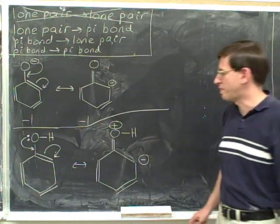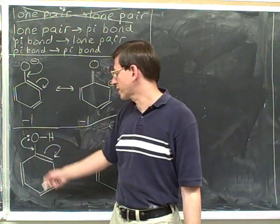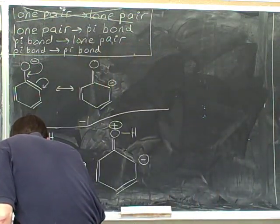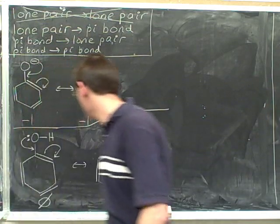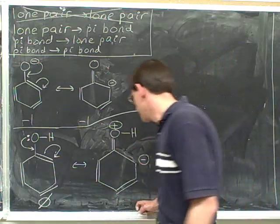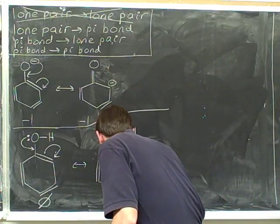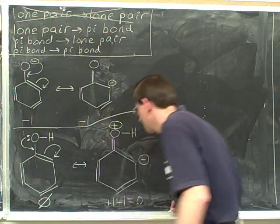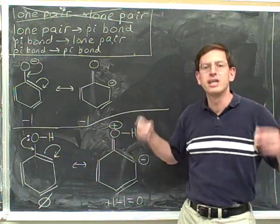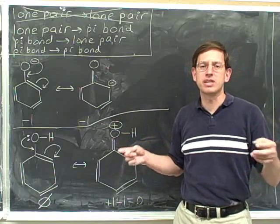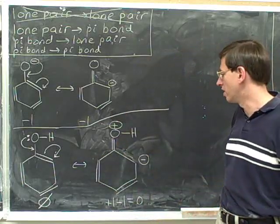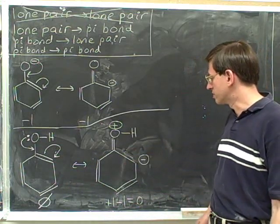Now let's make sure that the charge is balanced. The overall charge in this picture is 0, because there are no charges. So this picture has a net charge of 0. Now in this picture, there's one positive charge and one negative charge — plus 1 minus 1 is also 0. Both pictures have the same net charge of 0, which confirms that we're on the right track.